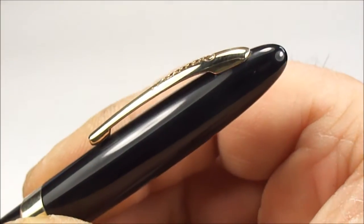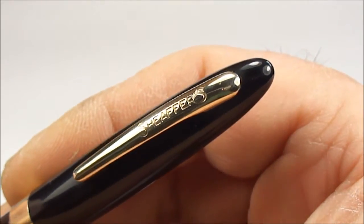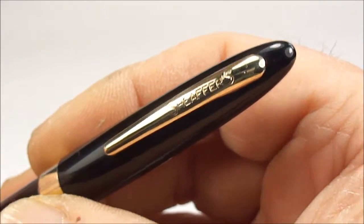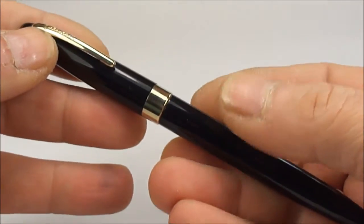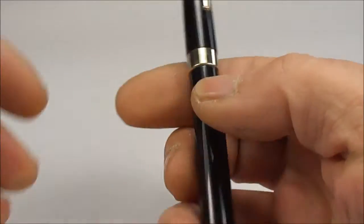You'll notice this particular model is the non white dot model so it doesn't actually have the white dot as some of the Schaefer's snorkels have. As I say this is the Saratoga, made in Australia approximately around the 1950s.